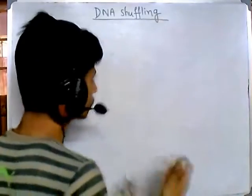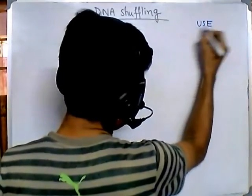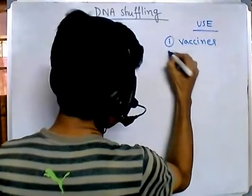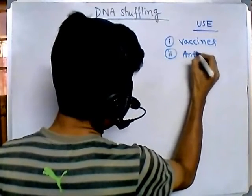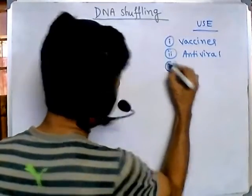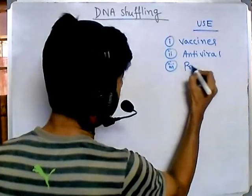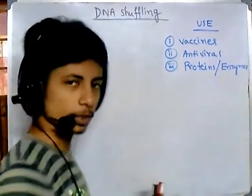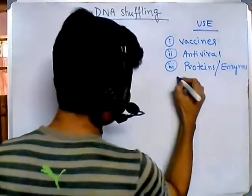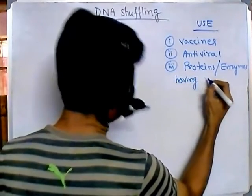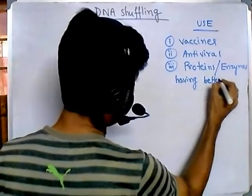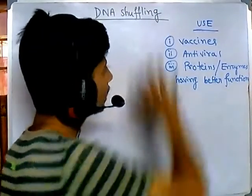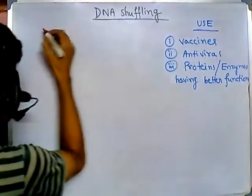DNA shuffling is very important because we can use this process to generate different types of vaccines, antiviral medicines, and many different varieties of proteins and enzymes — proteins with extra function, better function, or better activity. In a sense, DNA shuffling means we are creating artificial mutations in vitro.